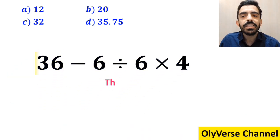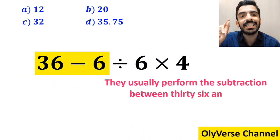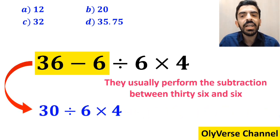The next step they usually perform is the subtraction between 36 and 6, simplifying this expression to 30 divided by 6 times 4.